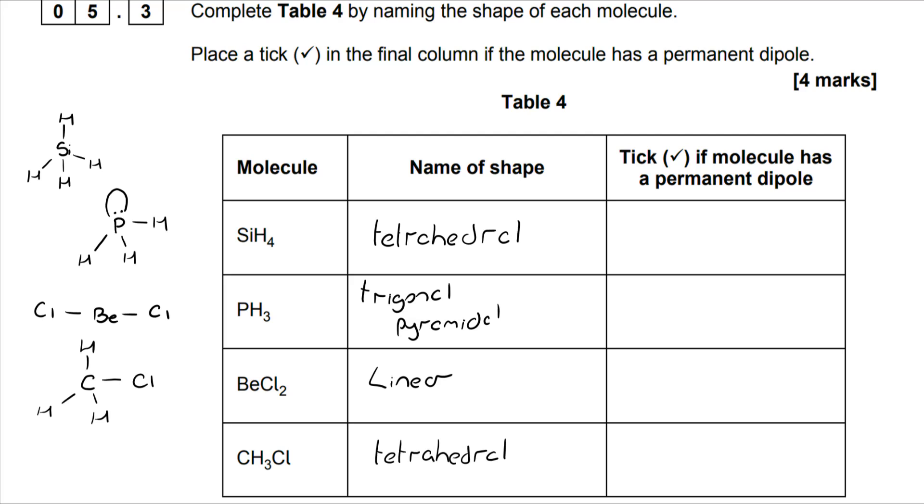In terms of the ones that have a permanent dipole, you'll get the marks for each correct molecule in its entirety. So you would need to have tetrahedral with no tick for SiH4, PH3 trigonal pyramidal with a tick, etc.